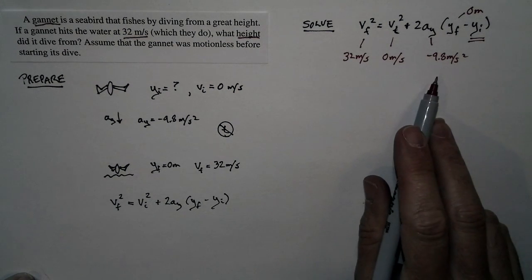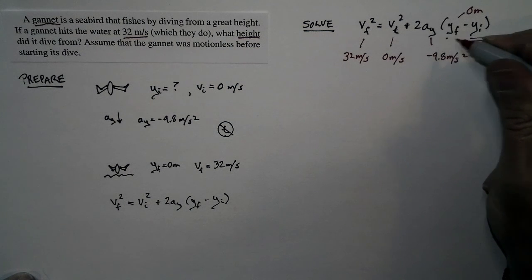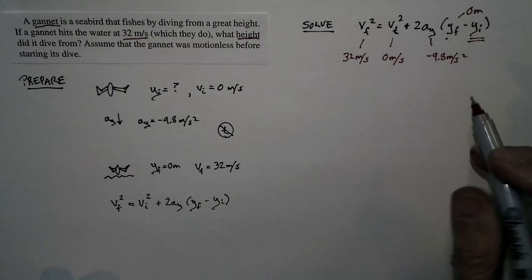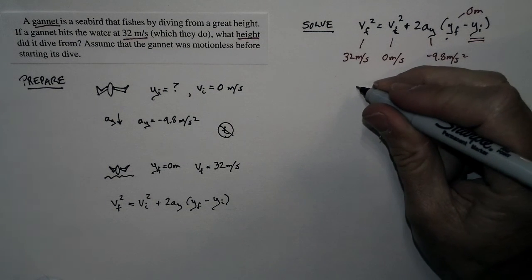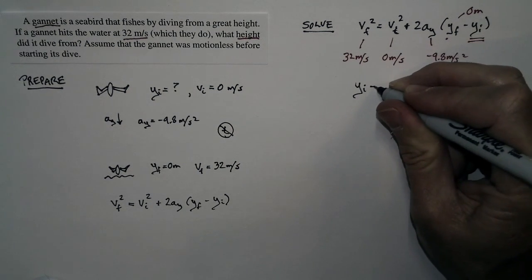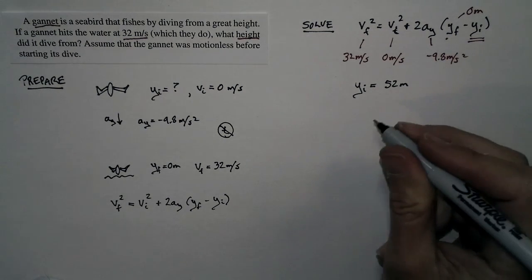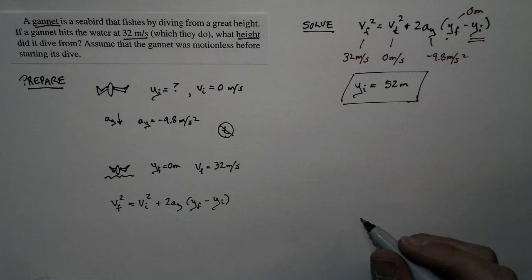Take a look at this relationship. We know everything in the relationship except for the initial position. And that's what we're trying to solve for. So we can put in numbers, we can rewrite the equation, and we can solve. And with a little bit of algebra, we come up with this. The initial position is 52 meters. So the gannet starts out 52 meters above the water.